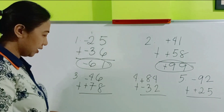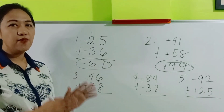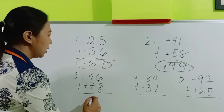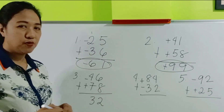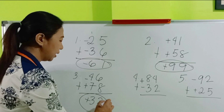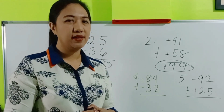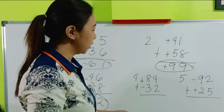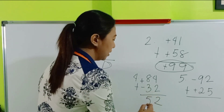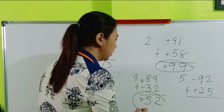Number 3 — they don't have the same signs, so we have to subtract. Make the bigger number the minuend: 78 minus 46 is 32. The positive sign should be followed, so the answer is positive 32. Number 4 — positive 84 plus negative 32. Apply the USS rule and subtract. 4 minus 2 is 2, and 8 minus 3 is 5. We follow the positive number because it's the bigger digit, so the answer is positive 52.